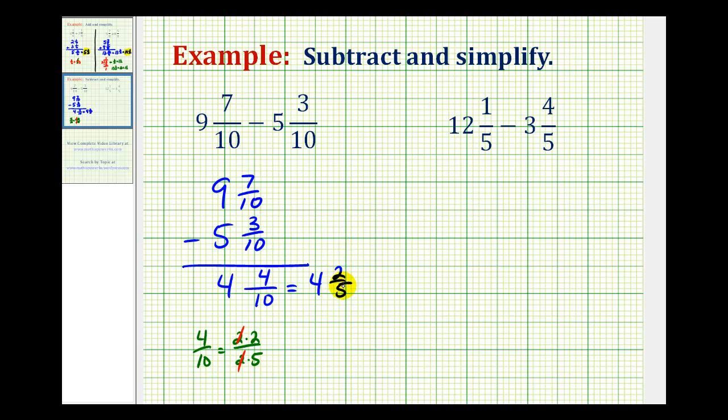So this one was pretty straightforward because we didn't have to do any borrowing. Now let's take a look at a second example. We'll first write this vertically. So we have 12 and 1 fifth minus 3 and 4 fifths.